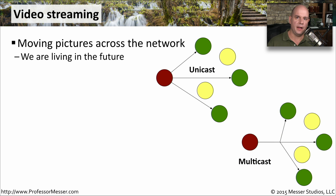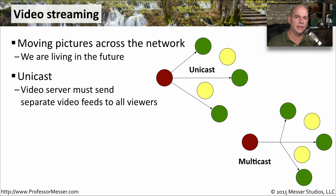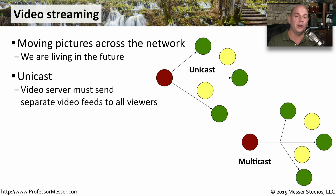Another technology that's important to unified communication is video streaming — the ability to send pictures and moving video over the internet. There are generally two different ways to do this. One is through a unicast, where one device is sending information directly to another device. If you have more than one user, there's a completely separate stream of information being sent to all of the additional users. If there are three users, there are three streams of video. If there are 20 users, there are 20 streams of video — even if the video is identical, there's a separate stream for every user.